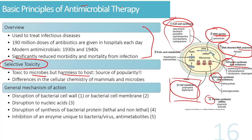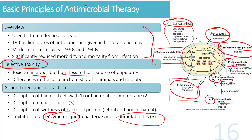A fourth category of drugs disrupts protein synthesis at various different points. The last strategy is to disrupt a unique metabolic pathway specific to the bacteria or virus that does not affect the host — either by disrupting an enzyme only found in that organism, or by blocking a metabolic pathway the bacteria or virus needs to survive.